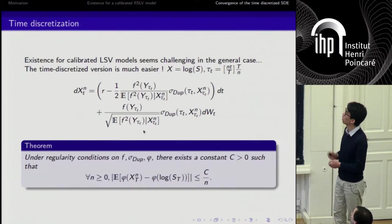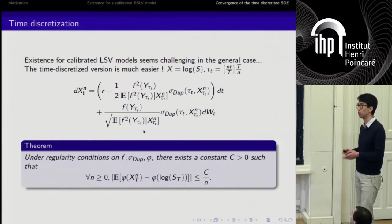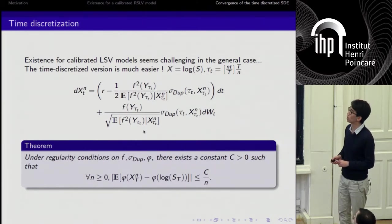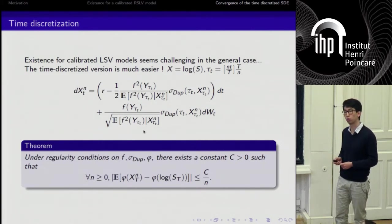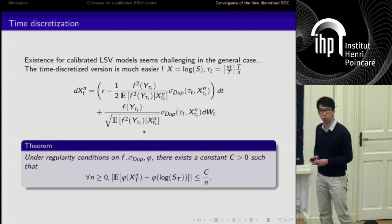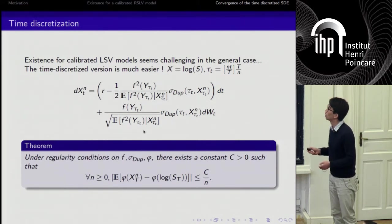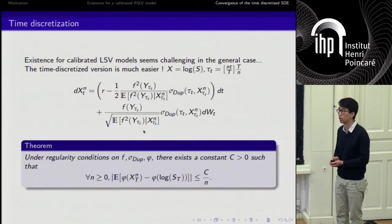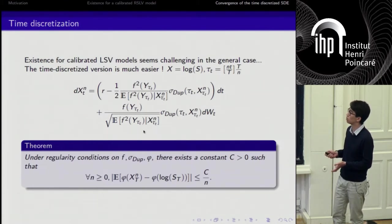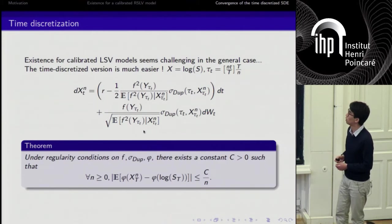Actually, the techniques we used to establish the existence of a regime switching local volatility model cannot be used to prove calibrated LSV models in the general case, for instance when Y is a Heston process. But the time discretized version of this SDE is much simpler. Now I just change a little bit of notation. I consider x equals the log of the spot, and I take a mesh, I discretize time with a uniform grid of size T over n. What I have here, x_n^t is just the Euler scheme associated to the SDE. Here all the coefficients are frozen at the biggest discretization time smaller than t.